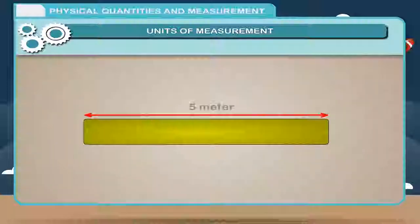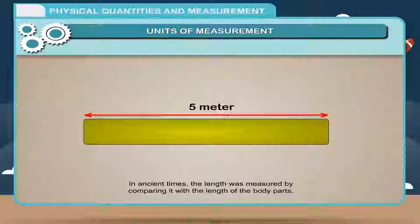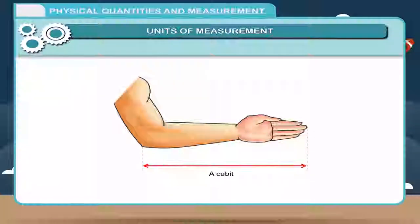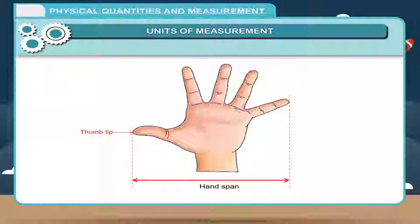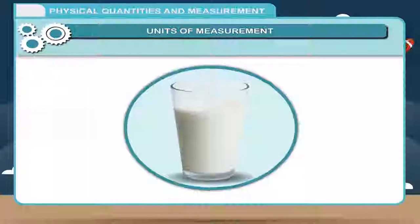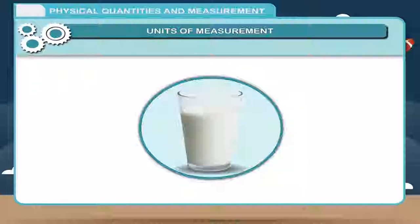Nowadays, to measure length, we use the unit meter. In ancient times, the length was measured by comparing it with the length of body parts. A cubit was the unit of length — 1 cubit was the length between the tip of the fingers and the elbow. A hand span was the length from the tip of the thumb to the tip of the little finger. These methods were inaccurate because the size of fingers differs from person to person. Similarly, one cannot use a glass to measure the exact volume of a liquid. Such a system of measurement was not correct.